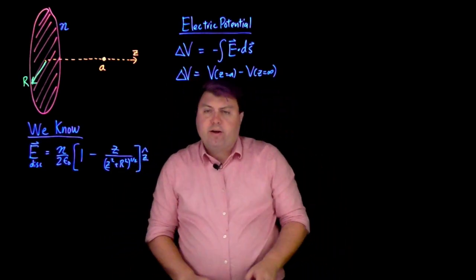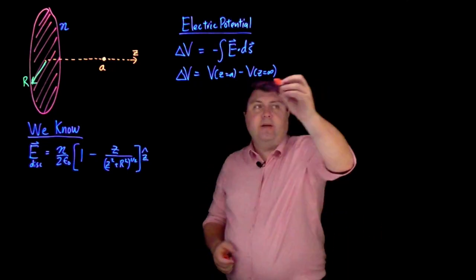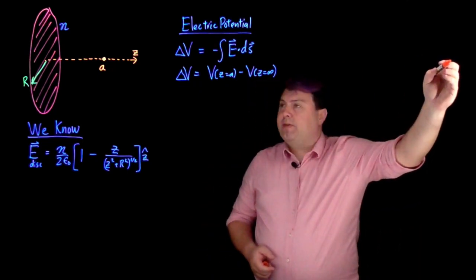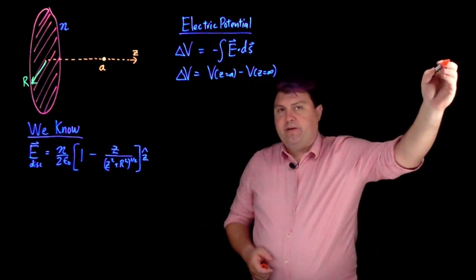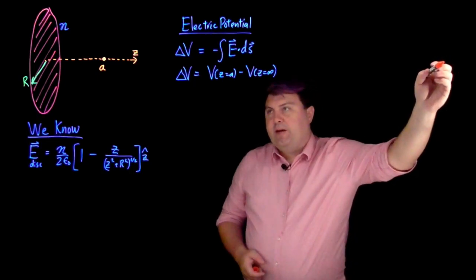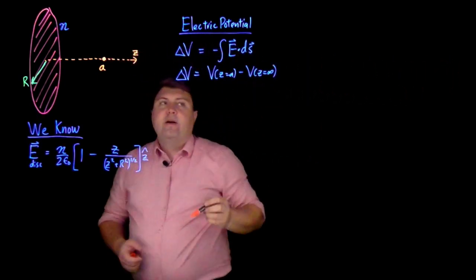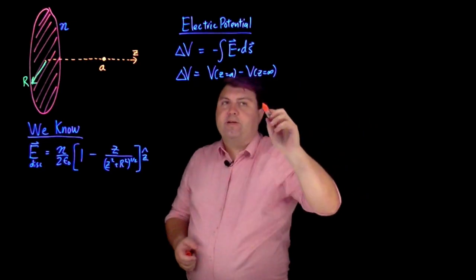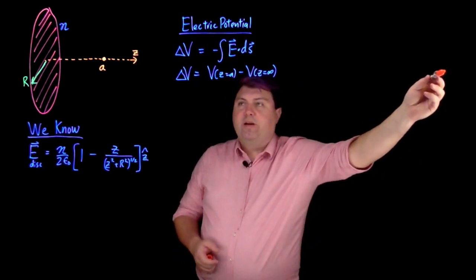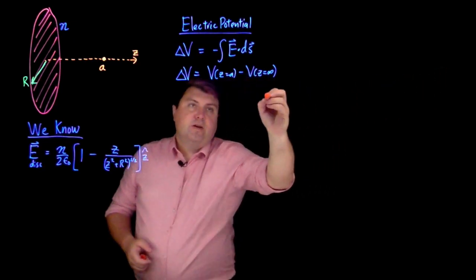Why am I doing this? Well if I go all the way out to infinity, I know that the electric field has to be zero out here. So if I start at infinity and then go to here, then I can define the electric potential at z equals infinity also to be zero. So then I would also get this being zero.